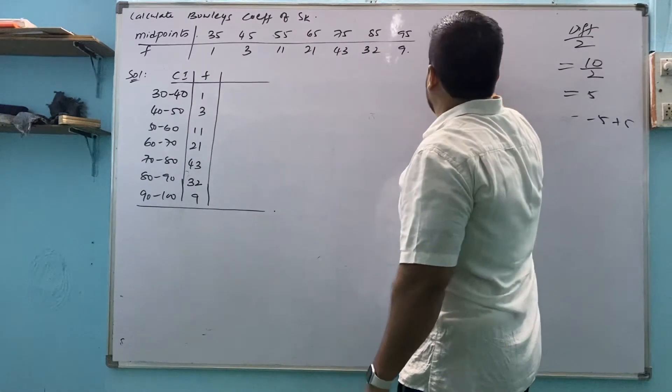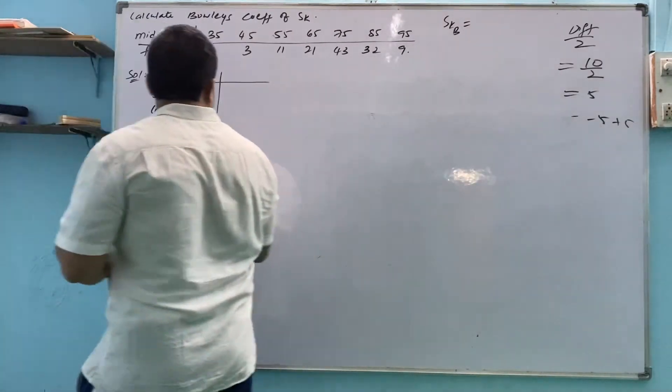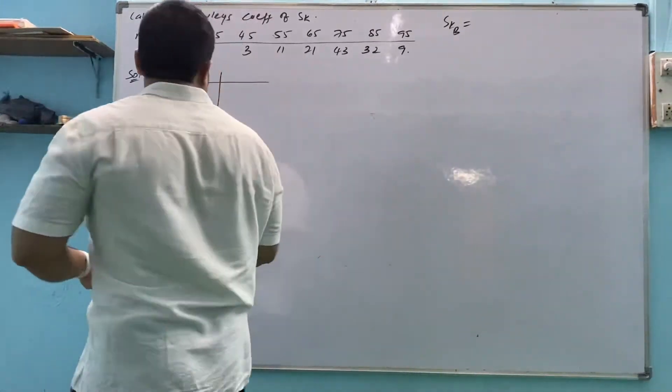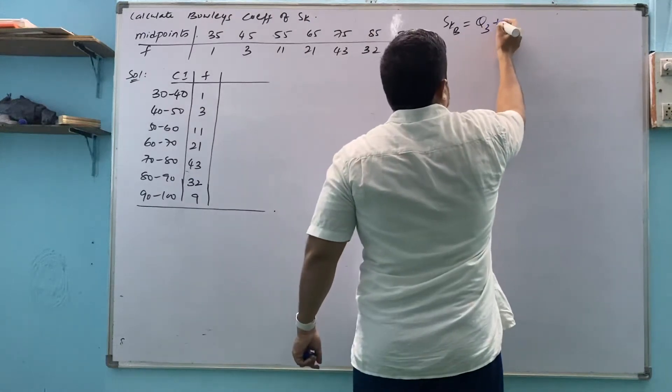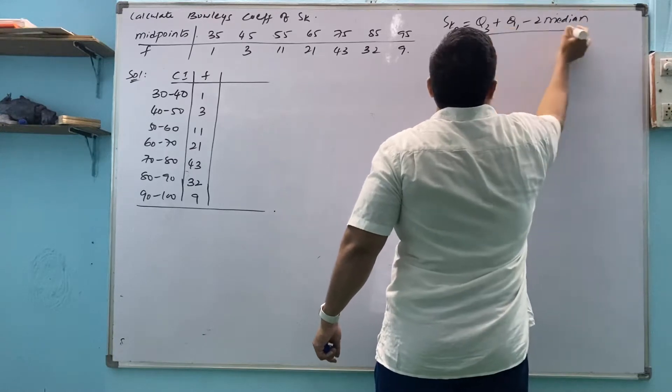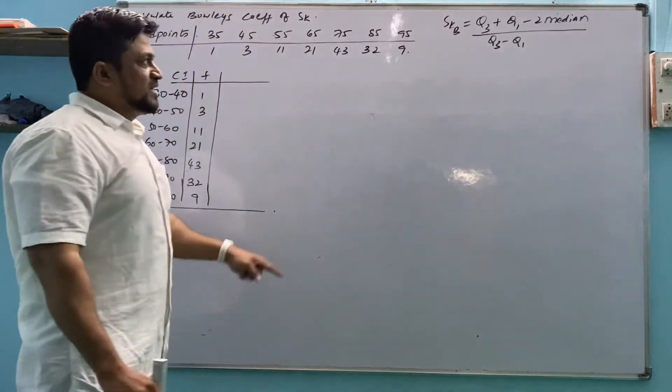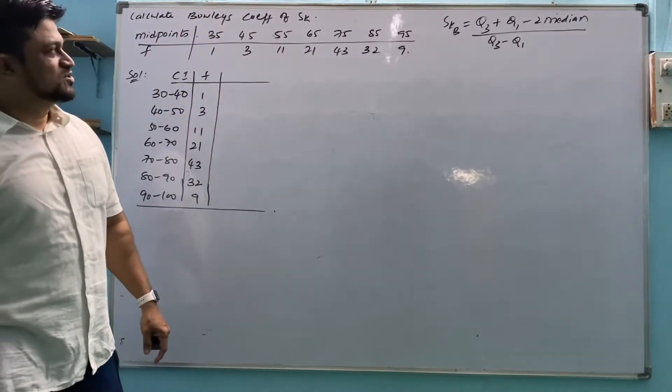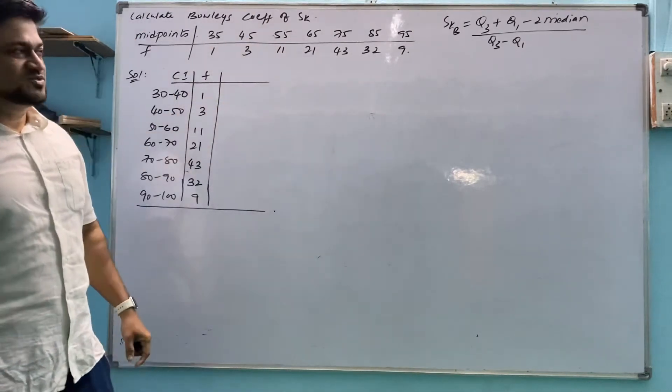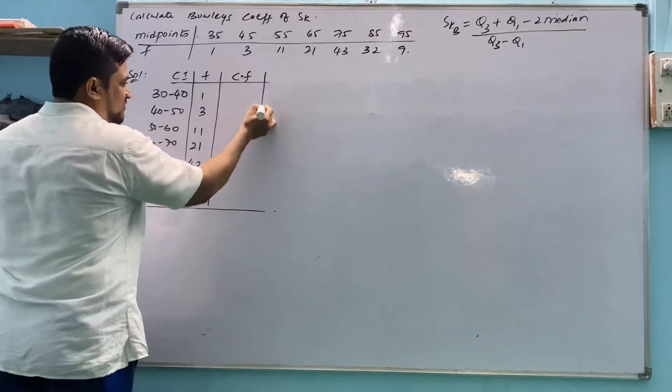Bowlish skewness. You should know the formula of skewness of Bowlish. What is that? Bowlish skewness is Q3 plus Q1 minus 2 median divided by Q3 minus Q1. Now, by seeing the formula, we came to the conclusion that we need to find Q3, Q1, median. And we have to substitute all the 3 values in skewness formula. So for Q1, Q3 and median we have to find cumulative frequency.